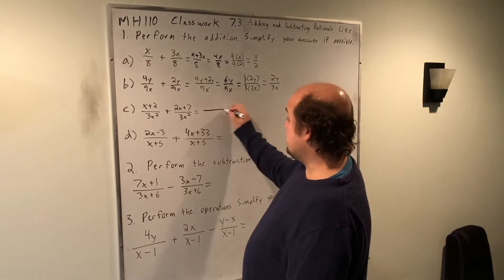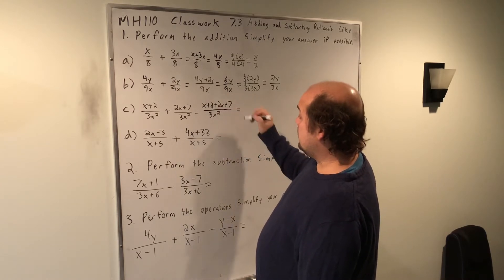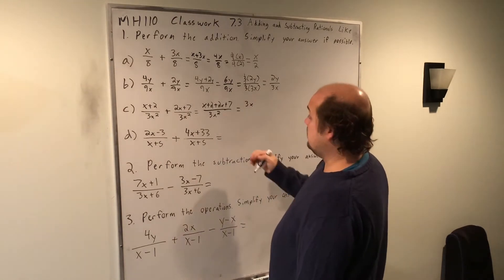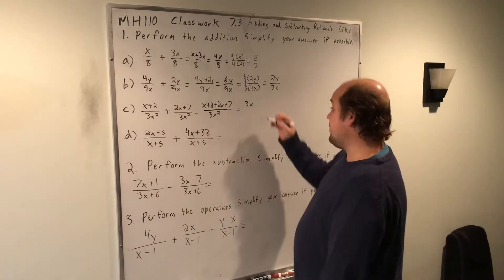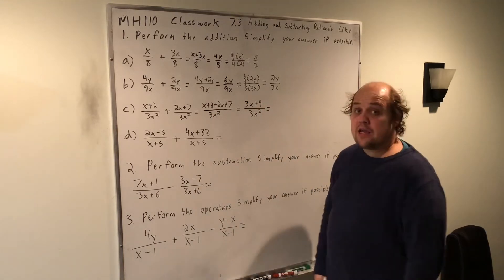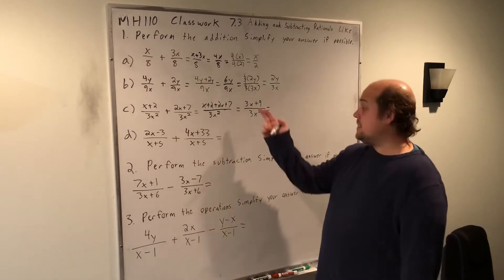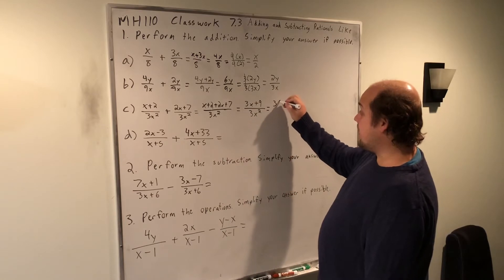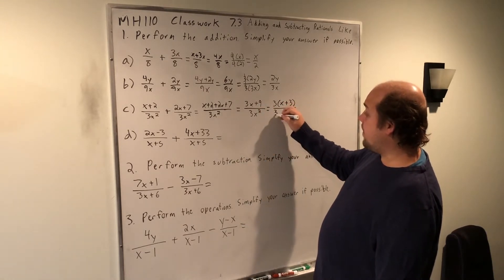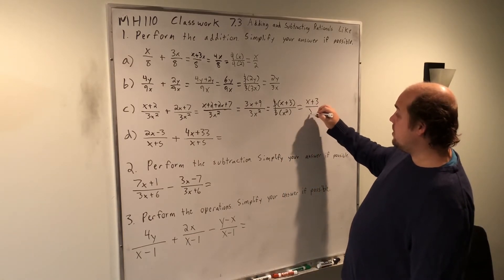For part C I'm going to keep the same bottom 3X squared. On top I'm going to combine X plus 2 plus 2X plus 7. The like terms here are the X and the 2X — combining X plus 2X gives 3X. The 2 and the 7 are also like terms — combining 2 plus 7 gives 9. So I have 3X plus 9 divided by 3X squared. I can't reduce the 3X with 3X squared because the 3X is being added to 9. What I can do is see that a 3 goes into both terms on top. Pulling out that common factor of 3, 3X divided by 3 leaves X and 9 divided by 3 leaves plus 3. On bottom, pulling out a 3 leaves it multiplied by X squared. So that common factor of 3 cancels, leaving me with X plus 3 divided by X squared.